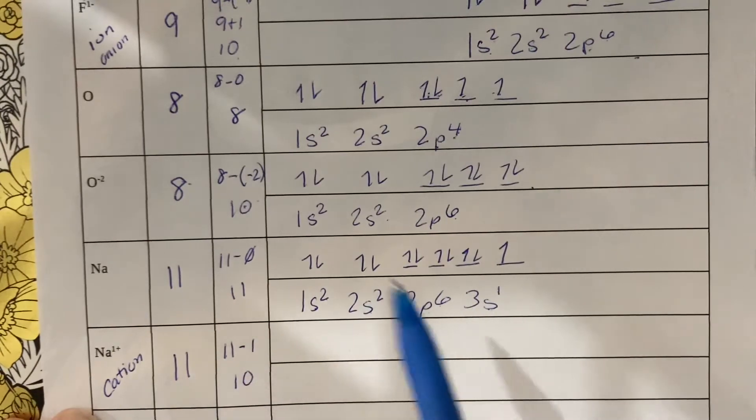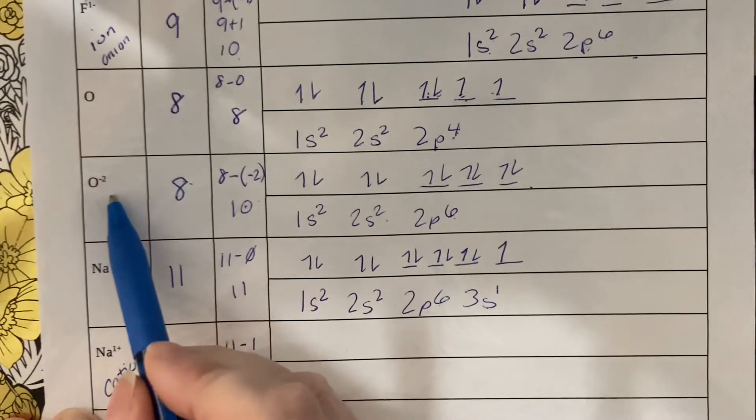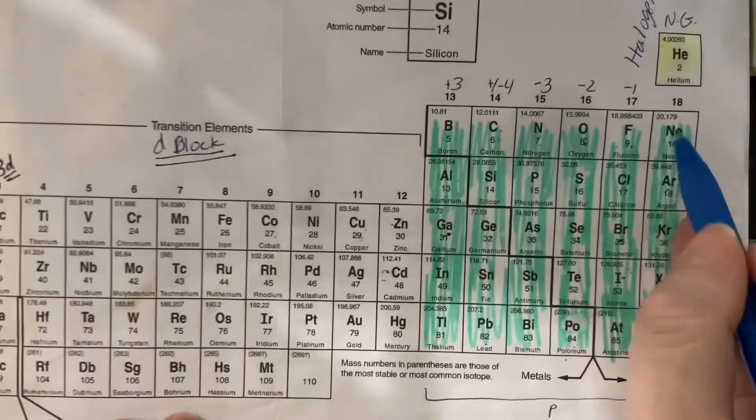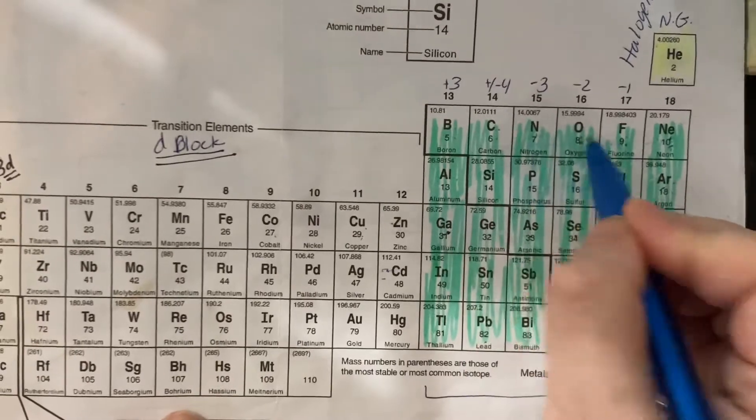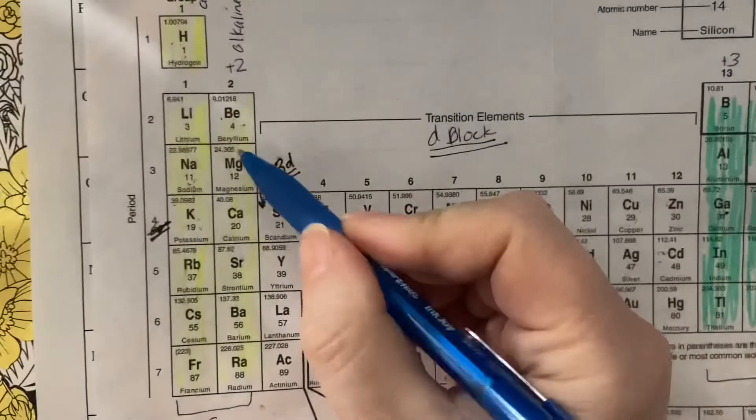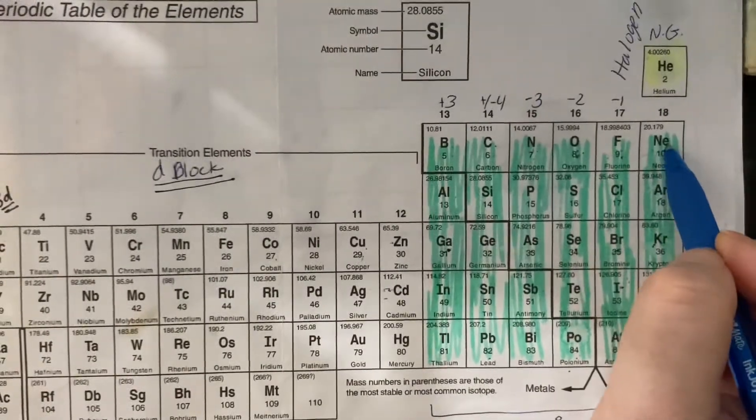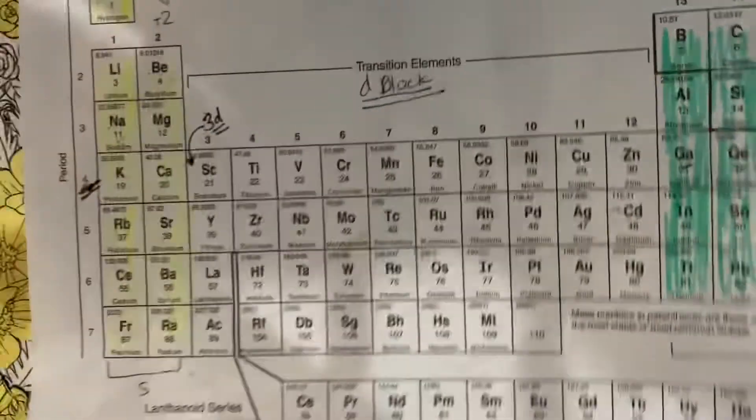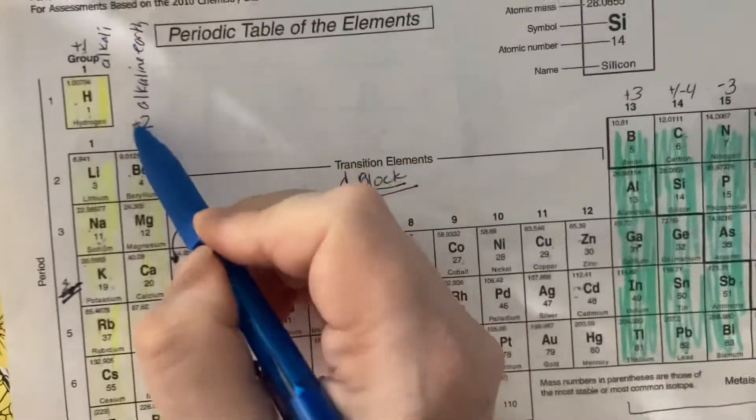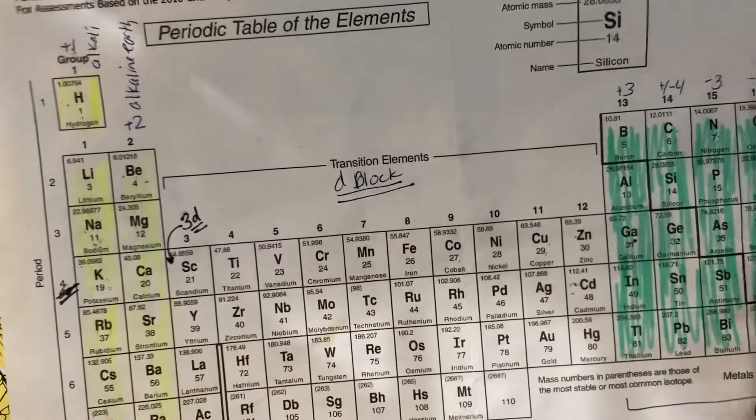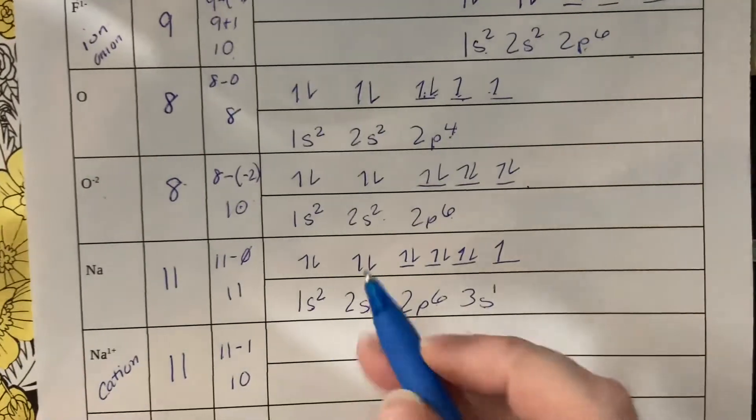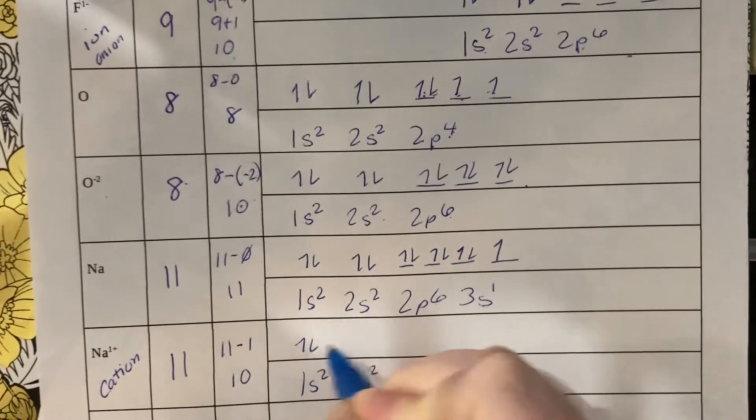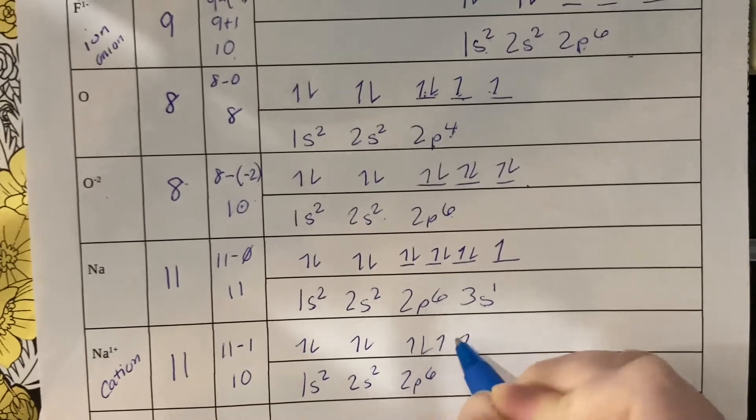Because all of those guys are trying to be like neon. Nitrogen, oxygen, and fluorine are trying to be like neon; magnesium and sodium are trying to be like neon. These guys add electrons—that's why they're negative—to be like neon. These guys are positive, so they lose electrons to be like neon. 1s² 2s² 2p⁶: up down, up down, up up up down down down.